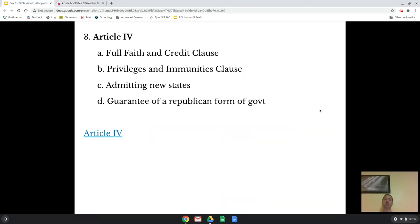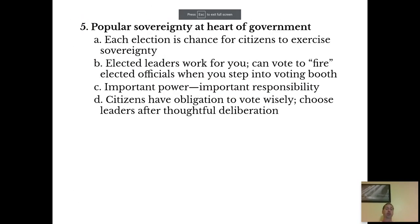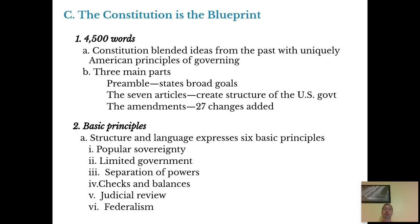Okay, that wraps up Section 1 — there is a ton of stuff in it. Going back to the basic principles: popular sovereignty, limited government, separation of powers, checks and balances, judicial review, and federalism. These are big ones, guys. You need to know what popular sovereignty is, limited government, separation of powers, checks and balances, and examples of the checks and balances like on that chart. When we get to Sections 2 and 3, we're going to be talking about how the constitution has changed and how we can change it, and we're going to look at the amendments. Until next time, talk to you later.